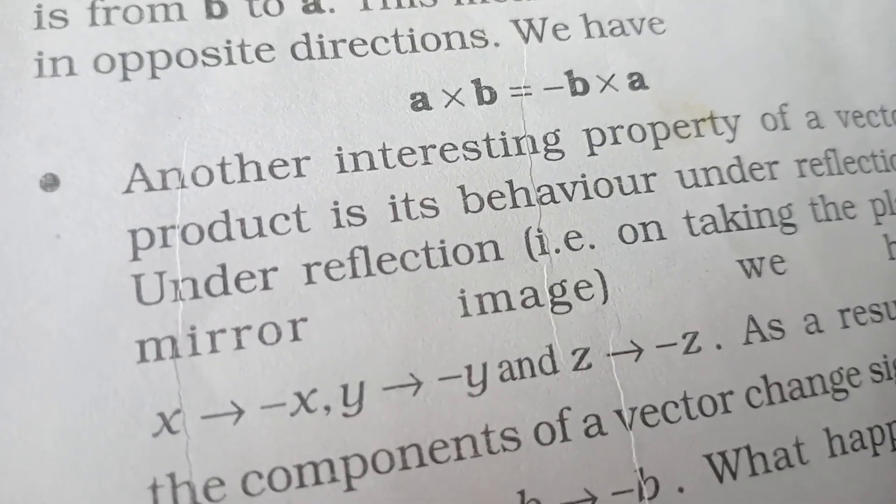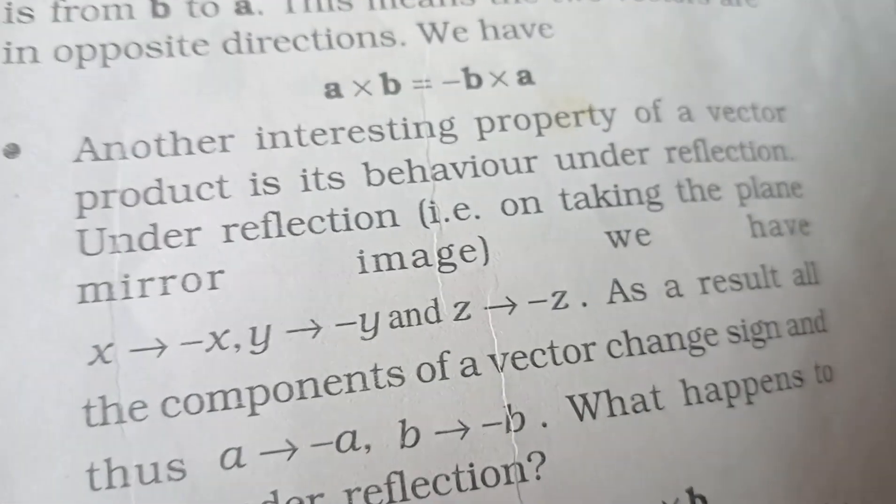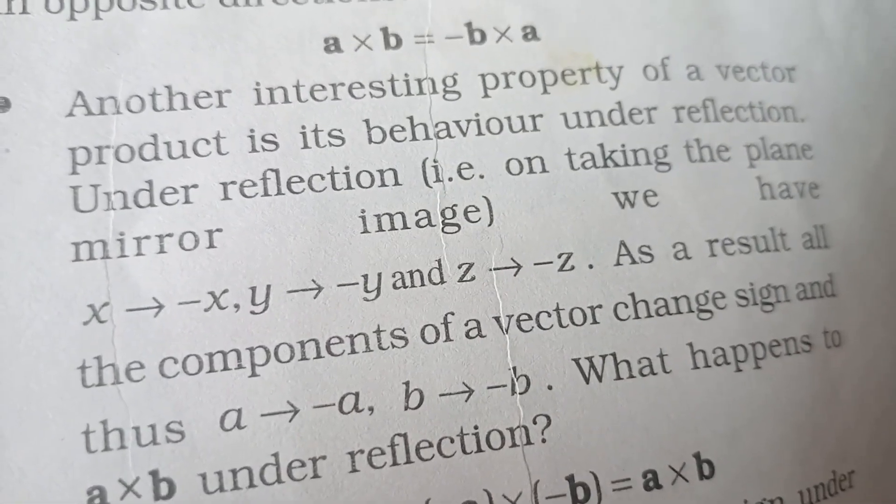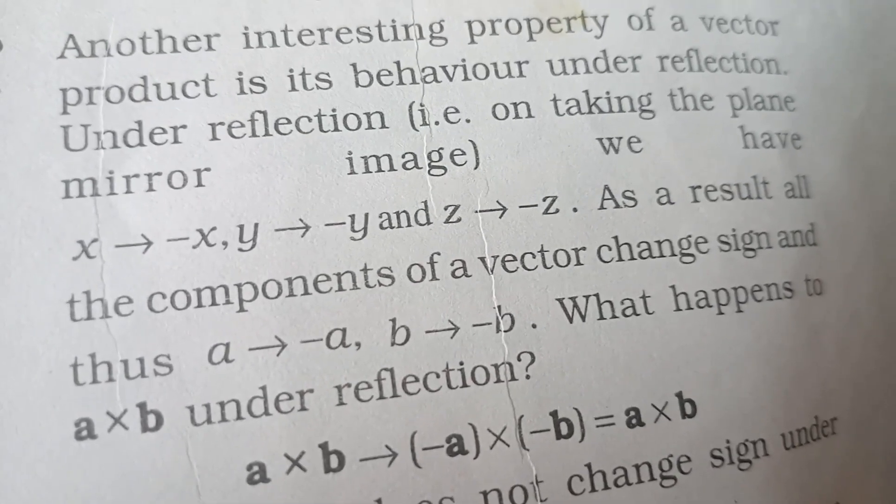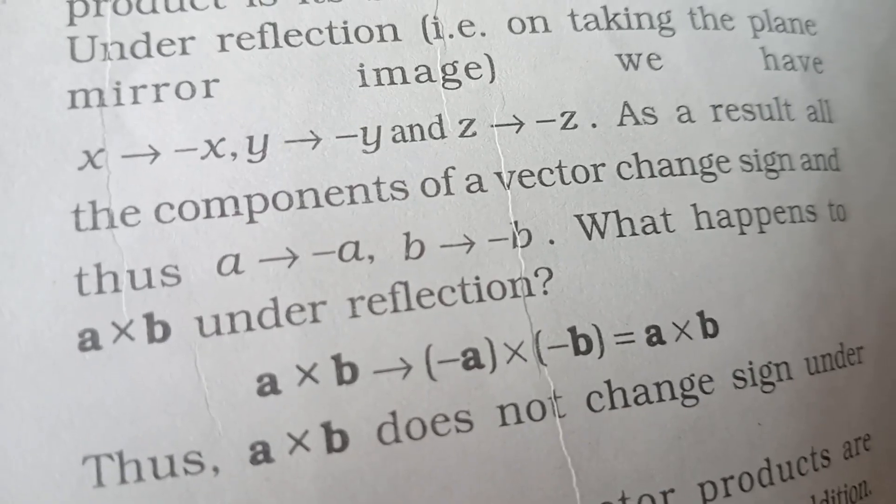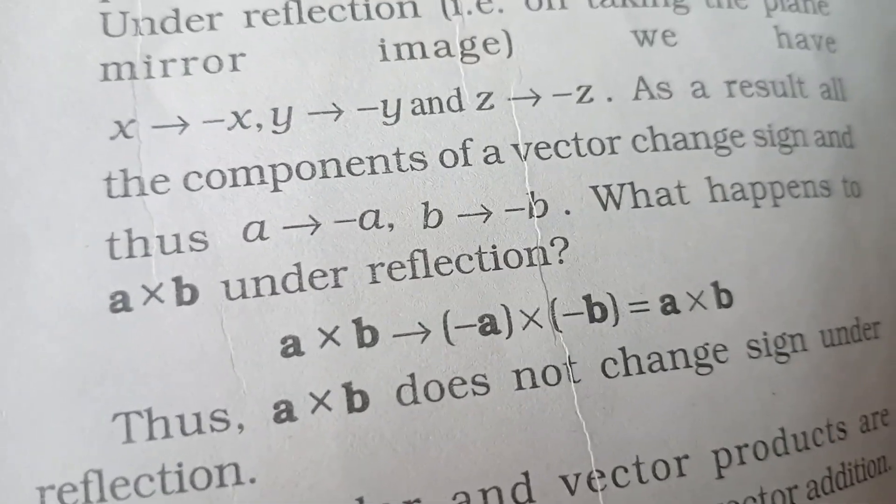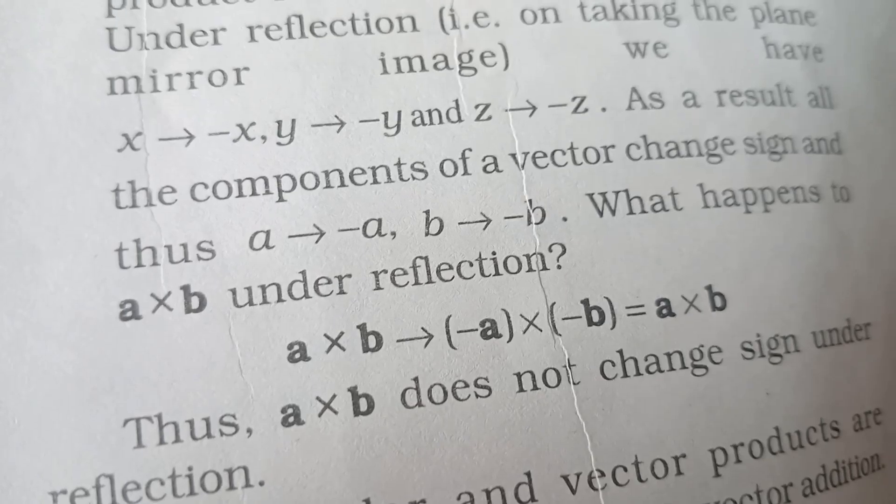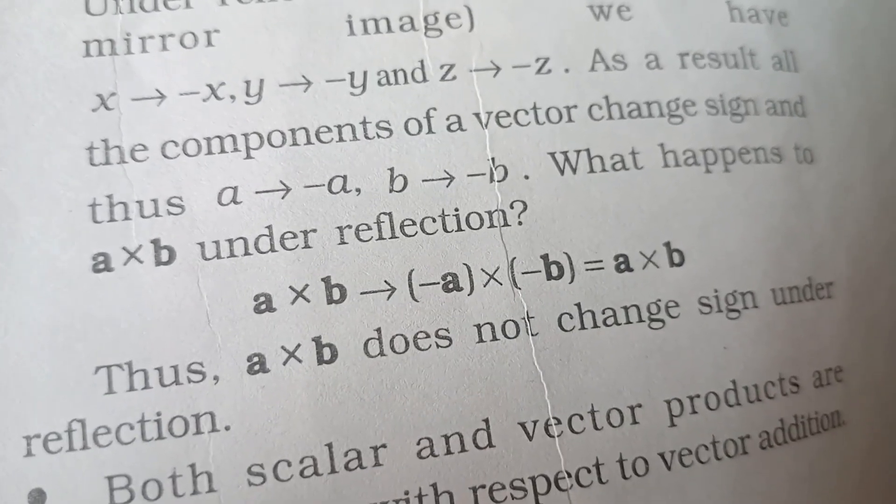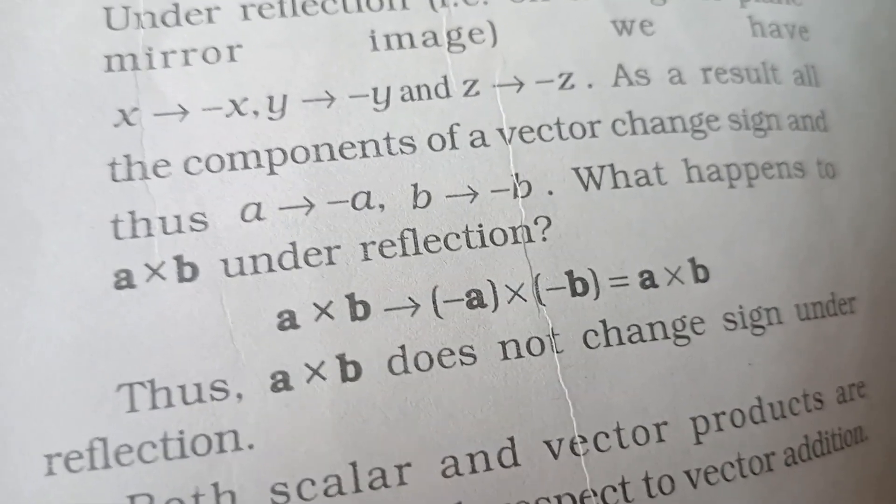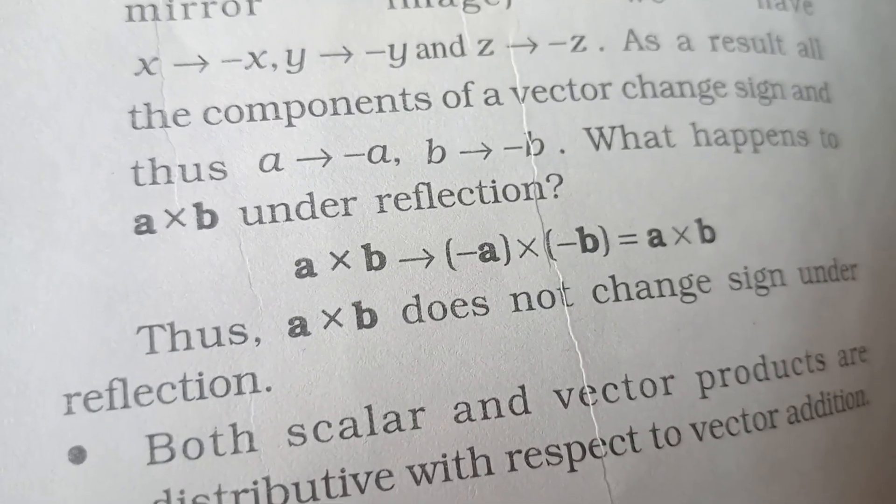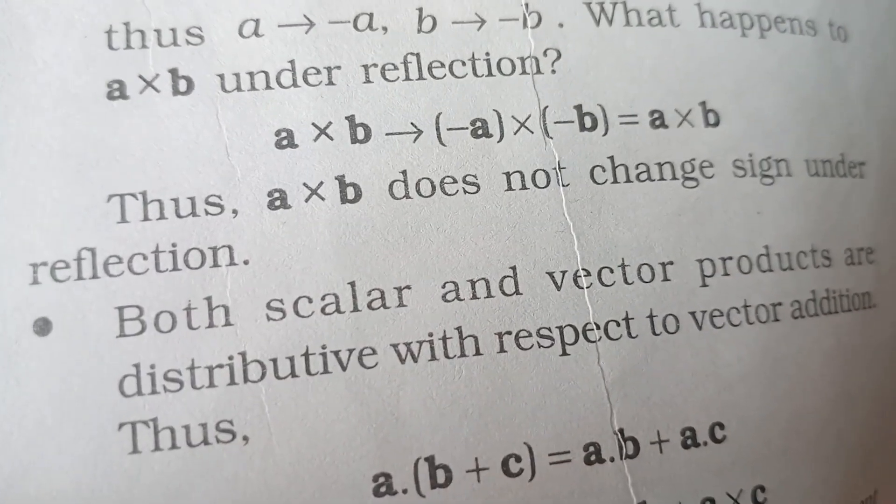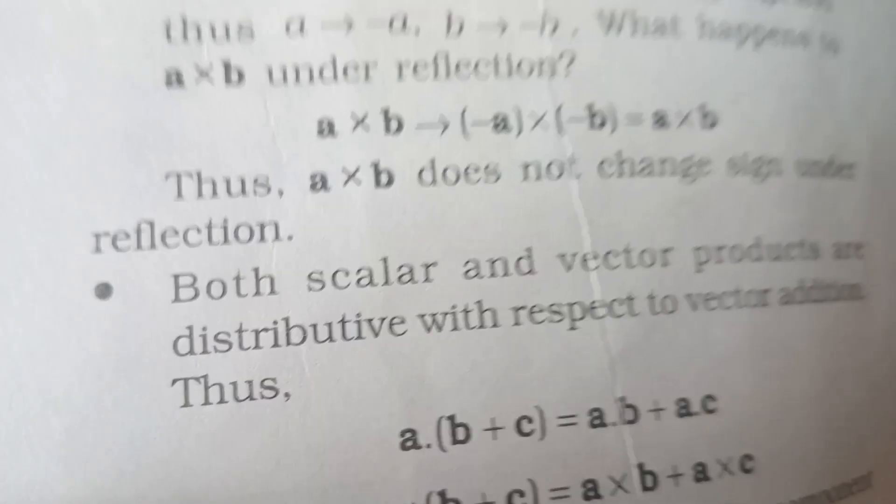Another interesting property of a vector product is its behavior under reflection. Under reflection, taking the plane mirror image, we have x equals minus x, y equals minus y, and z equals minus z. As a result, all components of a vector change sign. Thus A becomes minus A, B becomes minus B. What happens to A cross B under reflection? The same value results. This means A cross B does not change sign under reflection.